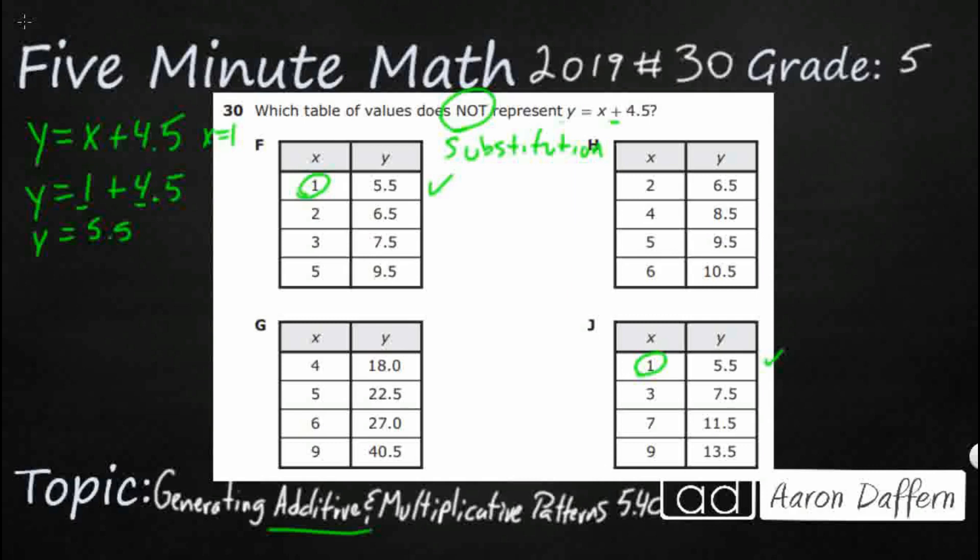We do have a 2, so let's check that right there. Y equals x plus 4.5, x equals 2. We will say y equals 2 plus 4.5. We add the whole numbers 4 plus 2, that's going to be y equals 6.5. This 2 is looking good here. I do have this 2 right there.